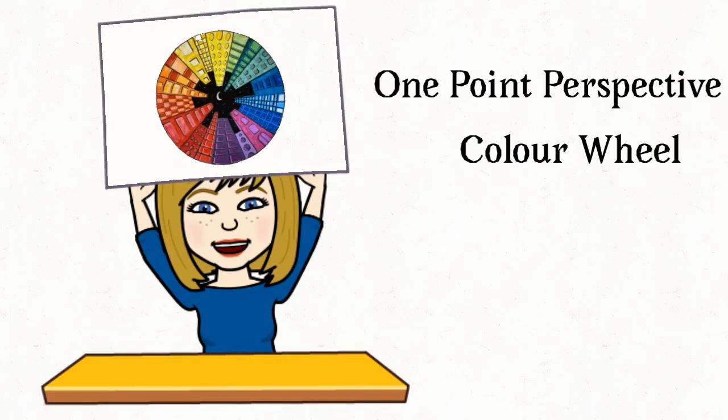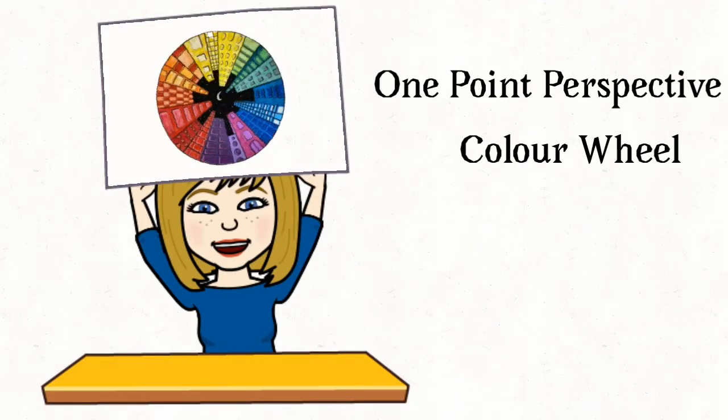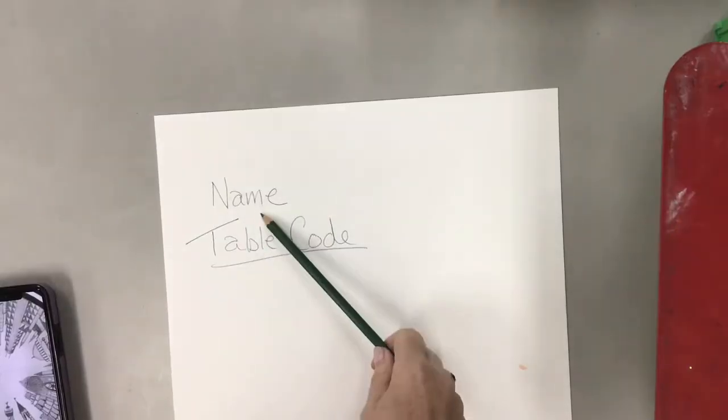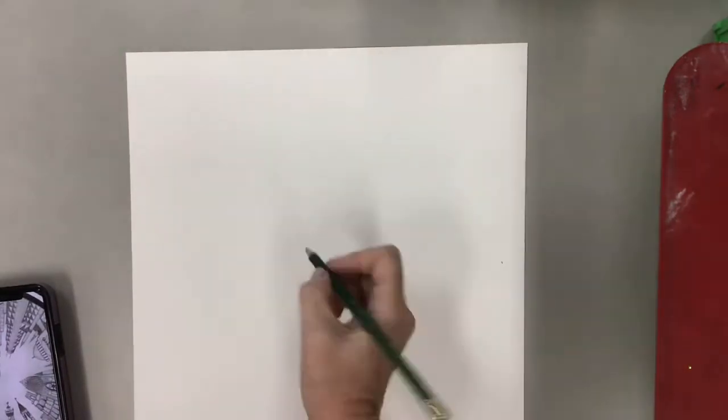Hello artists, today we're gonna have fun with cityscapes, one-point perspective, and a color wheel all in one project. Make sure your name and table code are on the back of the paper and you're gonna put a little dot in the center of your paper.